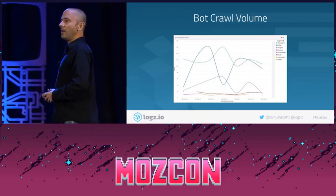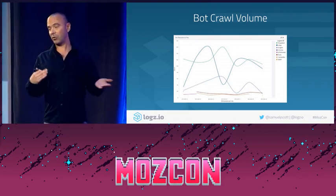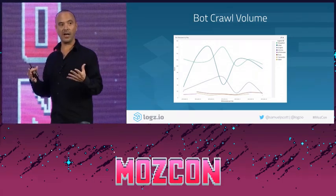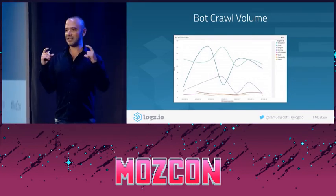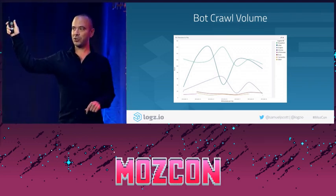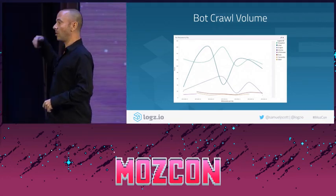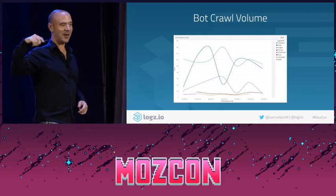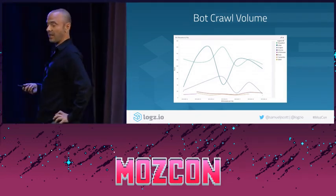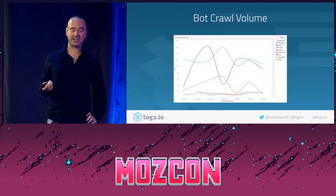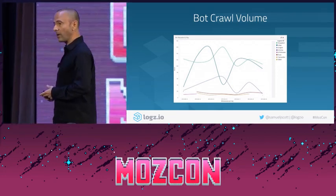Bot crawl volume. In the past, when technical SEOs would do log analysis, they would request a batch of log files from their DevOps engineer and look at the data, see what problems there are, and fix them. But there's a problem: when you export a batch of log data that way, you're only looking at a moment in time. You cannot see overall historical trends, which is where the story really lies. When you look at bot crawl volume, you can see the number of requests made by Googlebot, Yandex, Yahoo — and you can see if there's a big dip that indicates a problem you need to fix. If there's a big dip in Googlebot requests to your website, you want to check your robots.txt file, your robots meta tags, and also look for errors in Google Search Console.